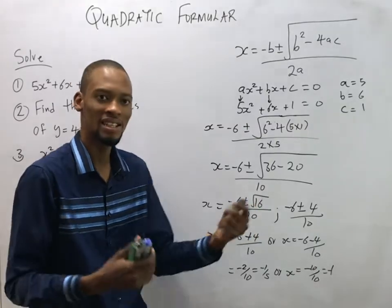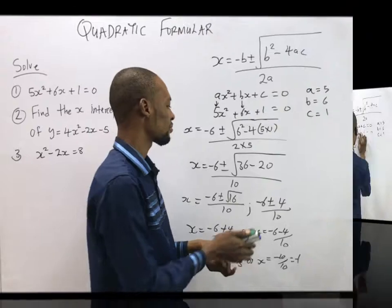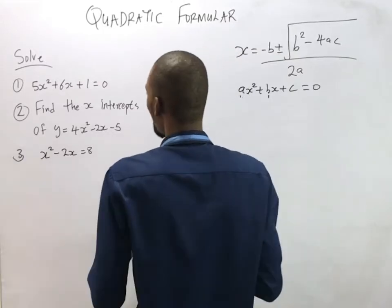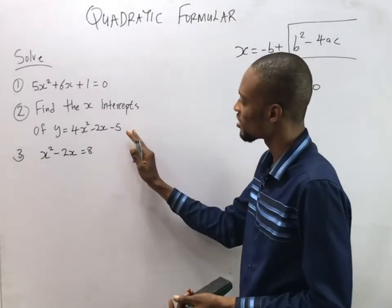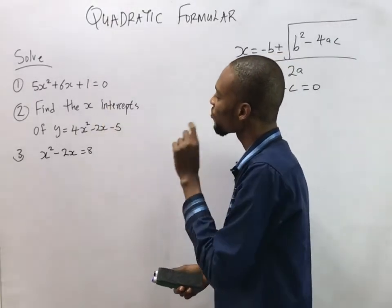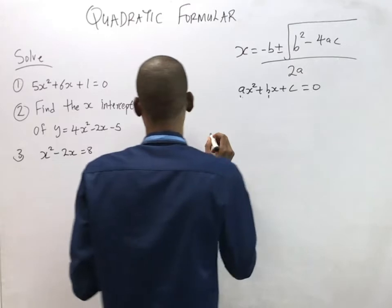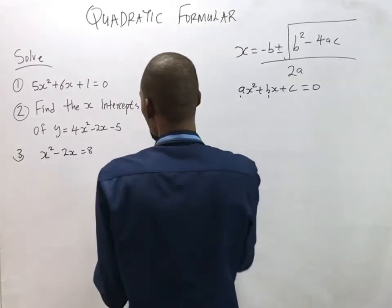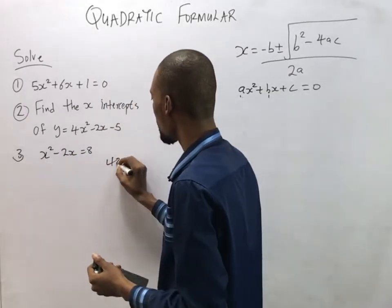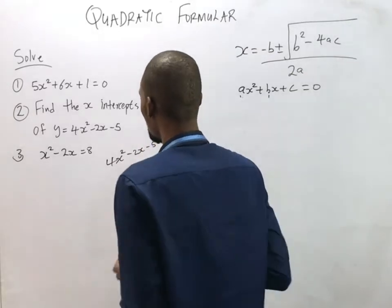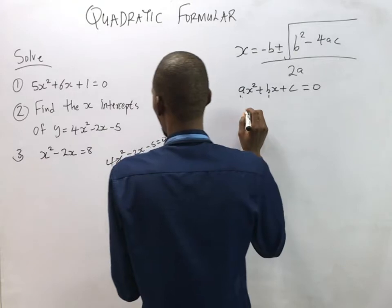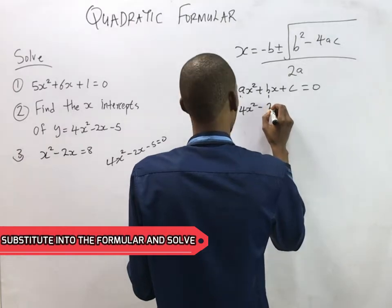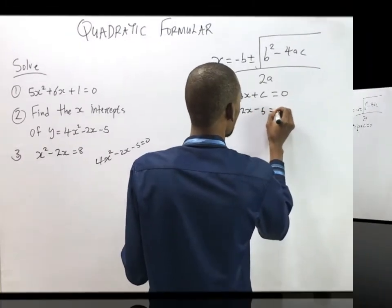That's all — you've solved that question. The second question says: find the s-intercepts of y equals 4s squared minus 2s minus 5. S-intercepts means y equals zero, so this leaves us with 4s squared minus 2s minus 5 equals zero. That's our quadratic equation for question two.